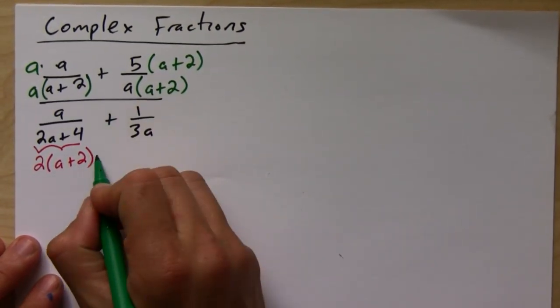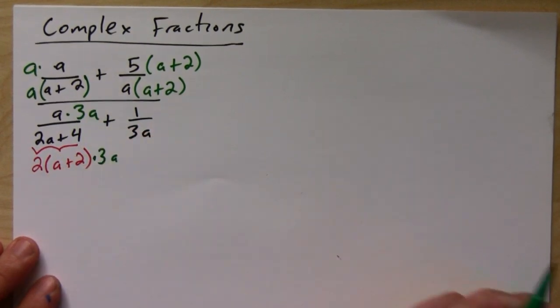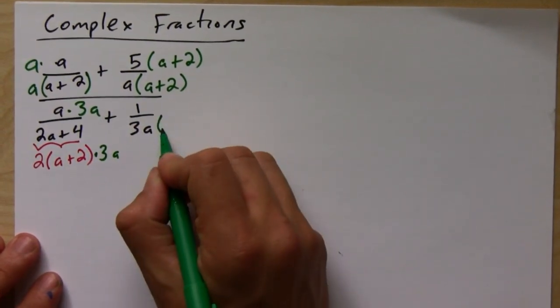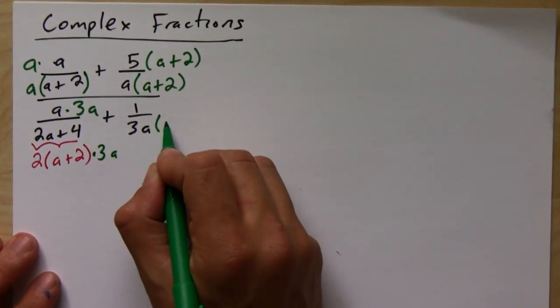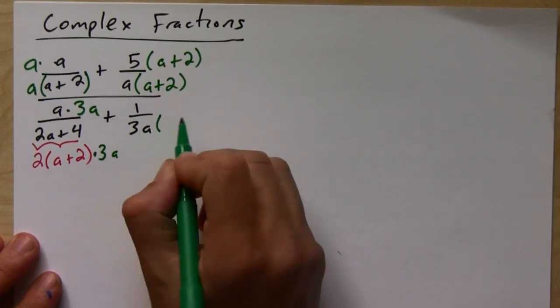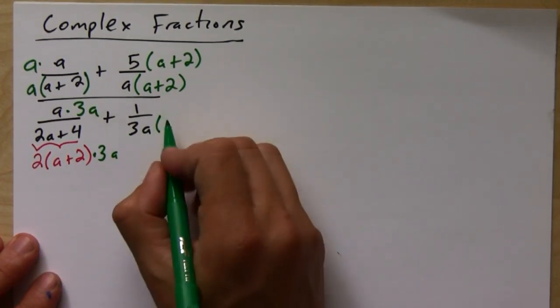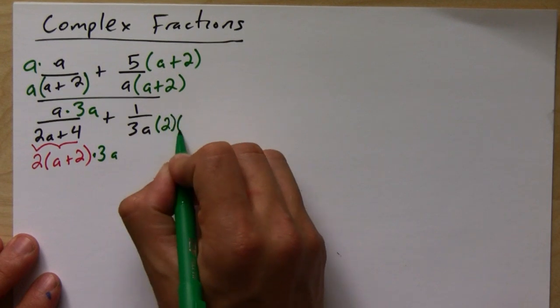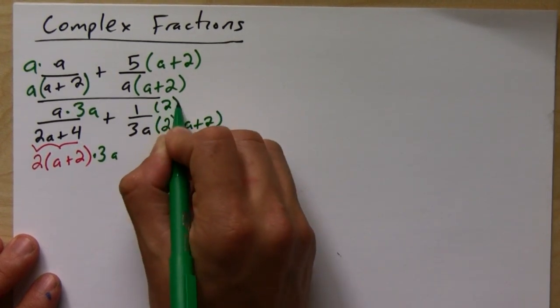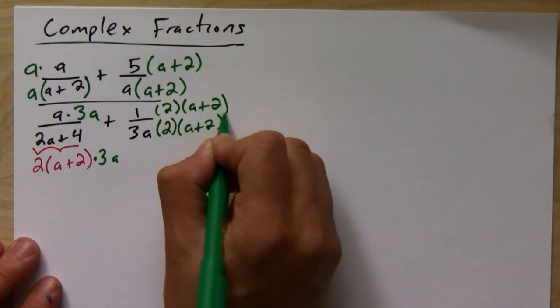This guy's missing a 3a, and this guy's missing a 2 and an (a plus 2), so I'll multiply by 2 and (a plus 2).